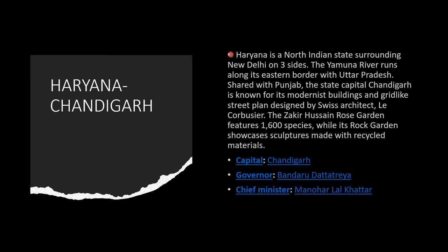The next one is Haryana, capital Chandigarh. Haryana is a North Indian state surrounding New Delhi on three sides. The Yamuna River runs along its eastern border with Uttar Pradesh. Shared with Punjab, the state capital Chandigarh is known for its modernist buildings and grid-like city plan designed by Swiss architect Le Corbusier. The Zakir Hussain Rose Garden features 1,600 species, while its rock garden showcases sculptures made with recycled materials. Capital is Chandigarh, Governor is Bandaru Dattatreya, and Chief Minister is Manohar Lal Khattar.